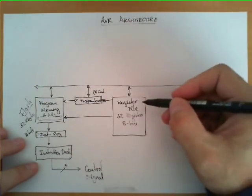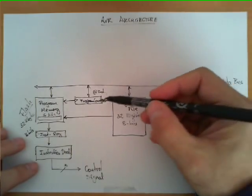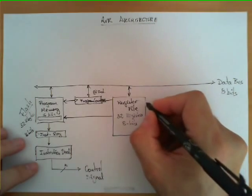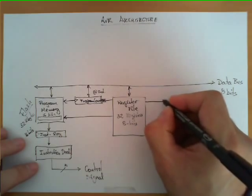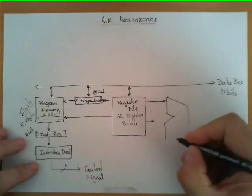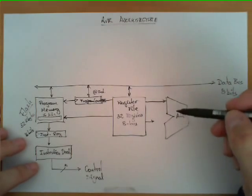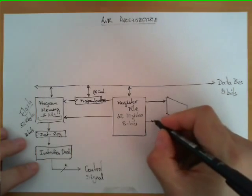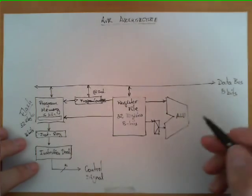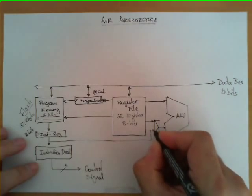Another important functionality of the register file is to load a certain value into the program counter, which is typically done in instructions that change the value of the program counter — namely, jumps. Additionally, two outputs of this block enter another very important block: the ALU, or arithmetic logic unit. This block receives two operands. One comes directly from the register file. However, the architecture offers a choice via a multiplexer for the second operand — either a value from the register file or a value coming from the instruction register.